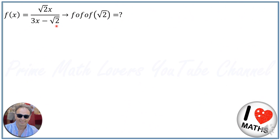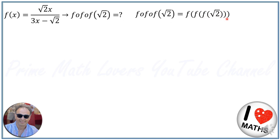For the first question, f∘f∘f of √2 means f of f of f of √2. We first need to calculate f of √2, then continue solving the problem from there.